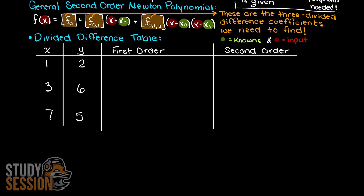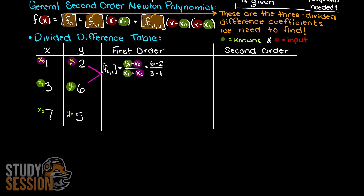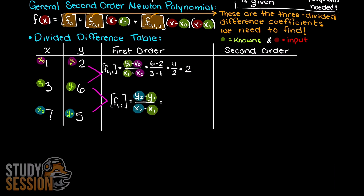Our first order divided difference is simply the slope between our first two data points. Therefore, we simply have our differences in our y values, y1 minus y0, divided by the differences of our x values, x1 minus x0. This works out to 2, and this is our first order f0 divided difference. Much like we did for f0, we are going to find the slope between points 2 and 1, and this works out to minus 0.25, and this is our first order divided difference f12.